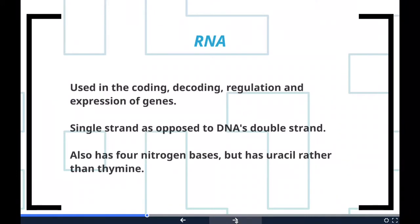RNA is more often found as a single strand folded onto itself rather than a paired double strand. Cellular organisms use messenger RNA (mRNA) to convey genetic information using the letters G, U, A, and C to denote the nitrogenous bases guanine, uracil, adenine, and cytosine, which directs synthesis of specific proteins. Note that RNA uses uracil rather than thymine.